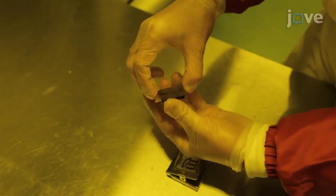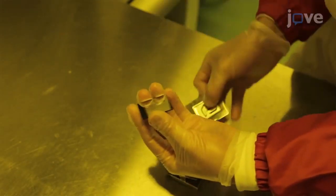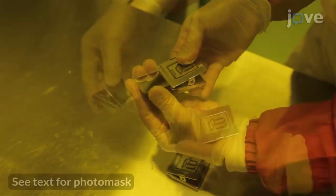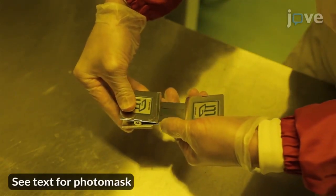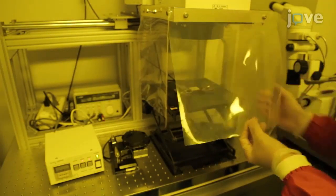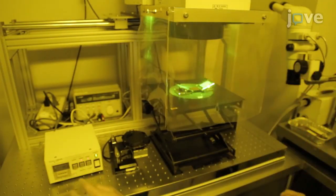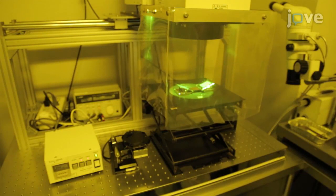After baking the substrate as described in the text protocol, contact the photoresist coated substrate with a photomask. Expose UV light vertically to the photomask. Ensure that the exposure dose is 80 millijoules per square centimeter and the wavelength is 405 nanometers.